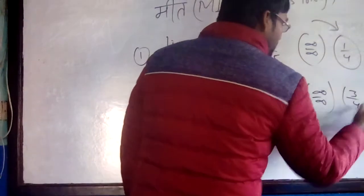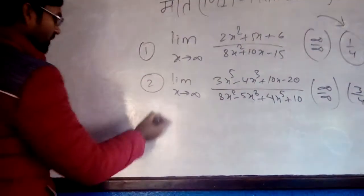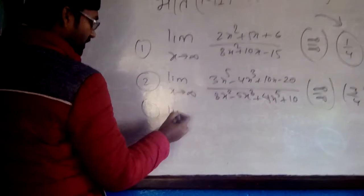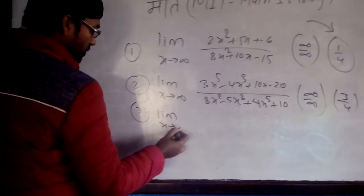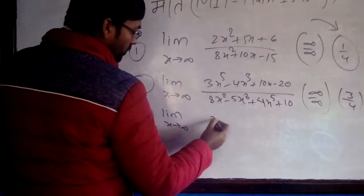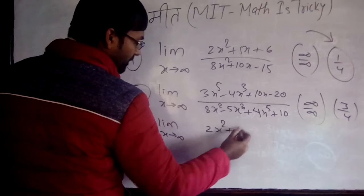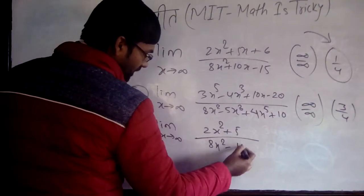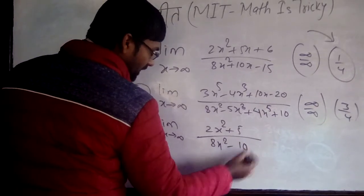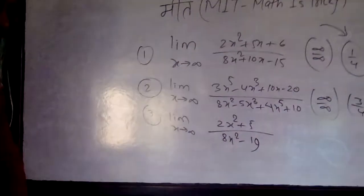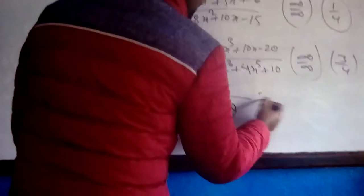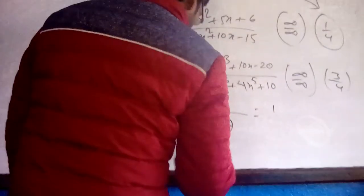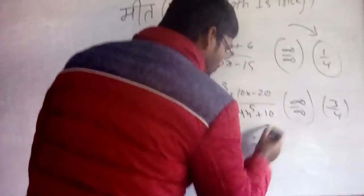Let me write one more question. Limit x tends to infinity: (2x² + 5)/(8x² - 10) or (8x² - 19). The answer is very simple. You can write here, again the answer will be 1/4. You may be surprised.